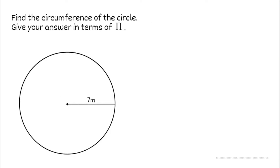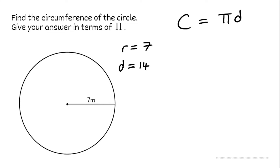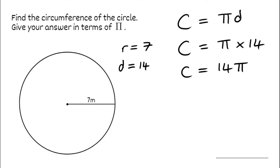For our next question we've got to find the circumference again and give our answer in terms of pi. We know circumference equals pi multiplied by the diameter, but this question is a little different — we're given the radius, which is 7. To get the diameter, all we have to do is double it, so the diameter would be 14. Substituting back: circumference equals pi multiplied by 14, so our circumference is 14π. Our final answer is 14π metres.